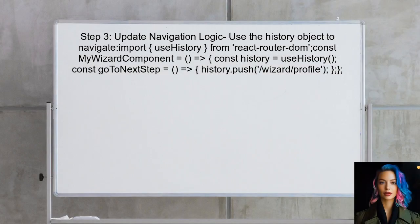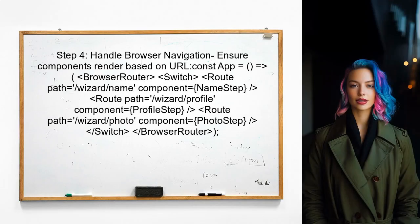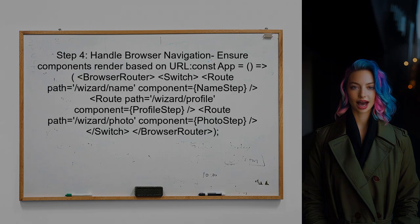Now, update the wizard's navigation logic. Instead of using traditional navigation, use the history object provided by React Router to change the URL when moving between steps. Finally, ensure that the wizard can handle browser navigation — when a user clicks the back or forward buttons, the correct component should render based on the current URL.